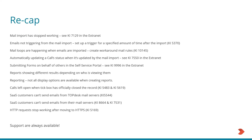Here's a quick recap of all the FAQs we've talked about today alongside their associated KIs in the extranet. Number one: the mail import had stopped working altogether. Number two: emails were not triggering from the mail import. Three: mail loops were happening when emails were imported in their thousands. Number four: automatically updating a call status when updated by the mail import. Five: submitting forms on behalf of others in the self-service portal. Six: reports showing different results depending on who was viewing them. Seven: not all display options were available when creating reports. Eight: calls were left open when the tick box had officially closed the record. We then looked at issues for SaaS customers sending emails out of Topdesk. And number ten was about HTTP requests stopping working after moving to HTTPS. Do remember that support are always available — if any of these don't answer your questions or if anything is unclear, please do just give us a call.